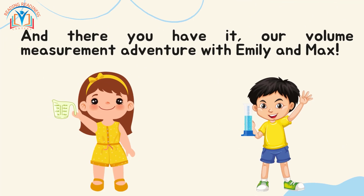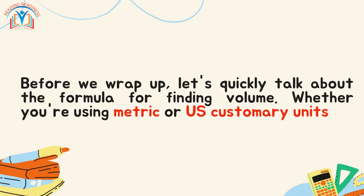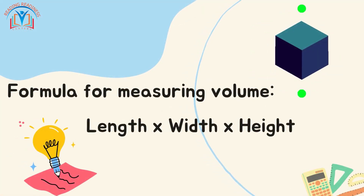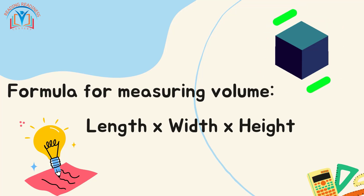Before we wrap up, let's quickly talk about the formula for finding volume. Whether you are using metric or US customary units, the formula for measuring volume is simple: length × width × height. Just multiply these three dimensions together to find out how much space an object takes up.